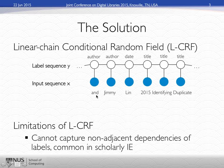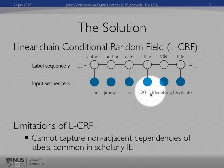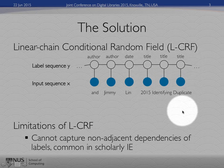then you would have something like: N. Jimmy Lin 2015, identifying duplicate. Those are the words or observations. What we want to be able to do is assign each of those words with a label like author. This is obviously a date that's supposed to be here, and the title.